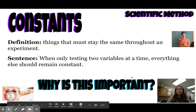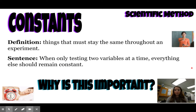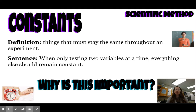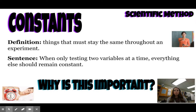Now we've talked about independent and dependent variables, so let's talk about constants. Write this definition in your notes: constants are things that must stay the same throughout an experiment. When only testing two variables at a time, everything else should remain constant. Why is it important to have constants? Pause the video and think about it. The main reason is that if things aren't kept the same throughout the experiment, they can skew our results — we might not get accurate results.